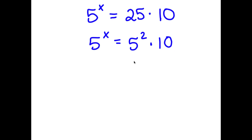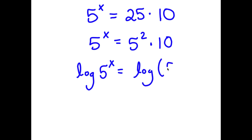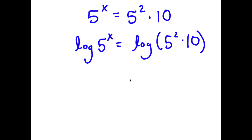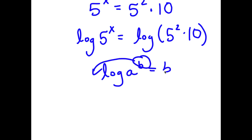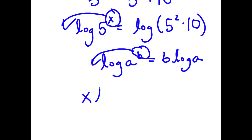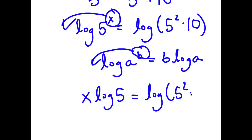Now I'm going to take the log on both sides. So now I have log of 5 to the power of x is equal to log of 5 squared times 10. An important rule to note is that if I have something in the form log a to the power of b, I can move the exponent b to the front — so this equals b times log a. In this case, I have log 5 to the power of x, and we can think of x as b. So I move x to the front: x times log 5 is equal to log of 5 squared times 10.